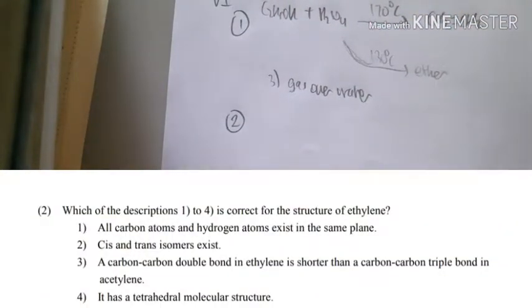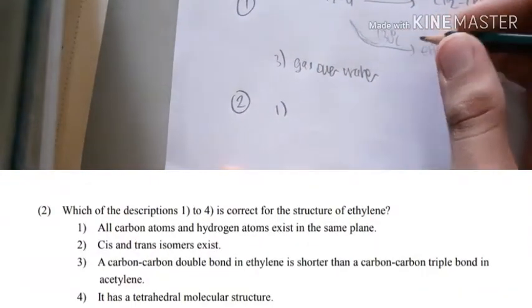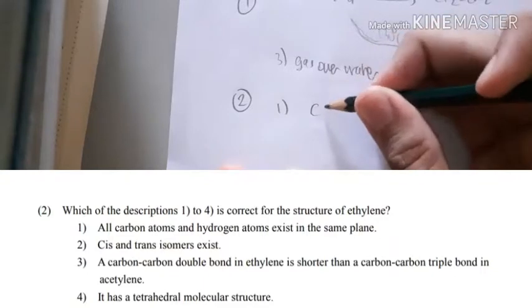For number two, the correct structure of ethylene: all of the carbon atoms exist in the same plane. Of course, you can see that they all have the same plane, so this is the answer.